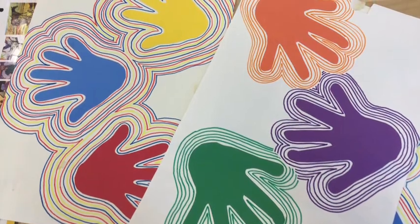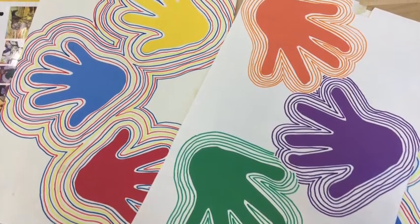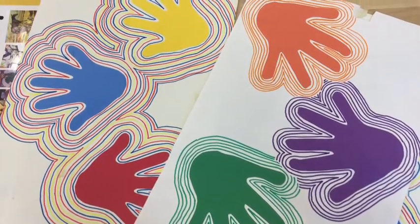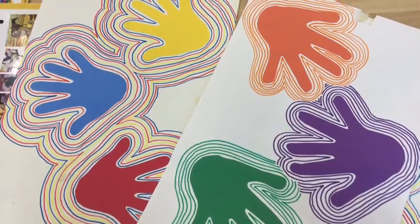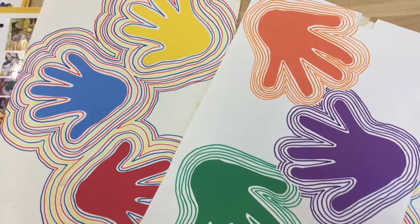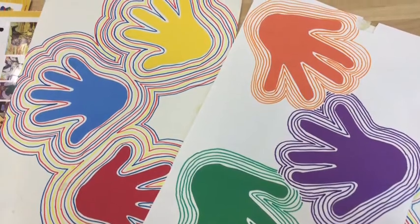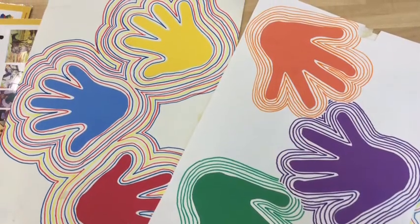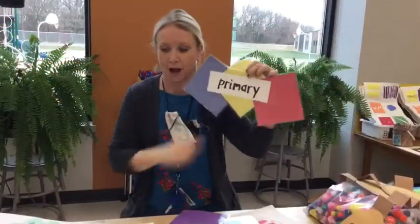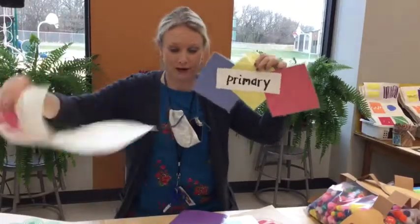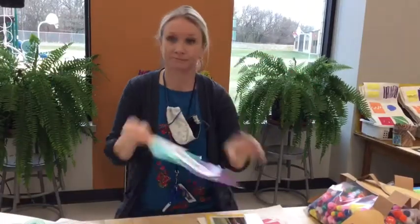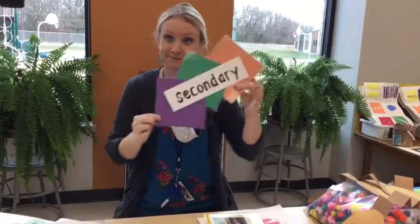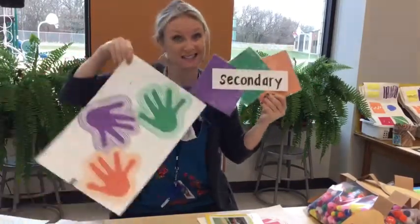Hi first graders! We've been talking a lot about two color families: the primary colors — red, blue, and yellow — and the secondary colors — orange, purple, and green.